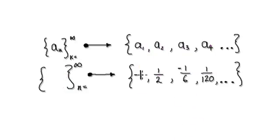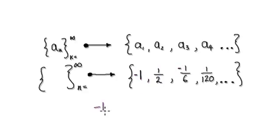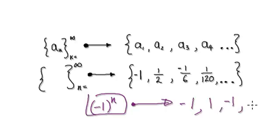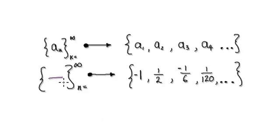Now look at the signs: negative, positive, negative, positive, and so on. To generate an alternating sign, we use (-1)^n. When n equals 1 it gives -1, when n equals 2 it gives +1, when n equals 3 it gives -1, and so on. So (-1)^n generates the alternating sign for us.